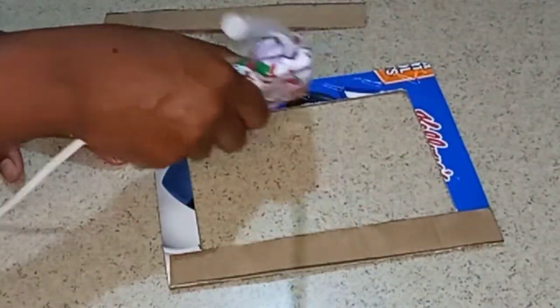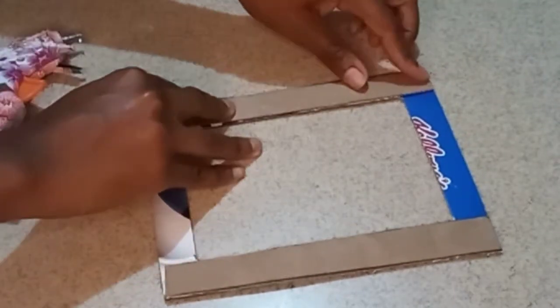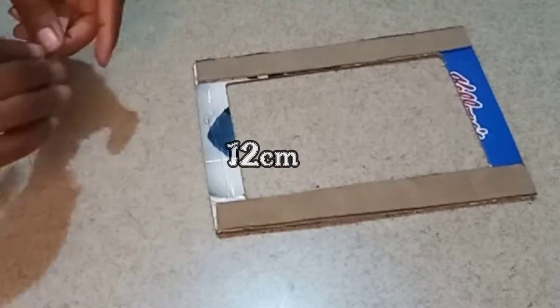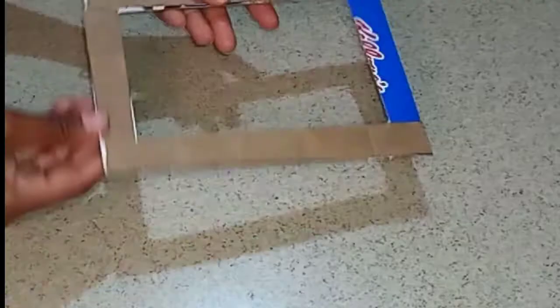After you have completely secured those down go in with another small piece of cardboard to go in the center between those two pieces that you have just glued down. Please note that you're only going to be adding this small piece of cardboard to either the bottom or the top section.